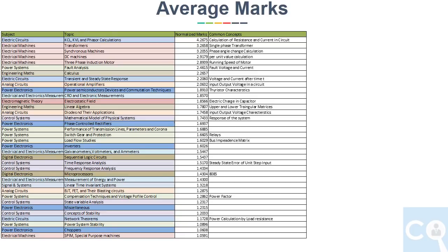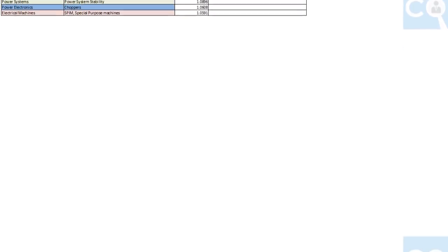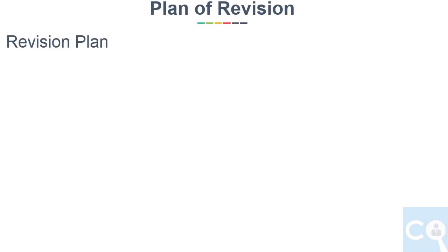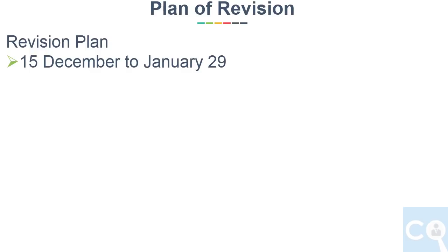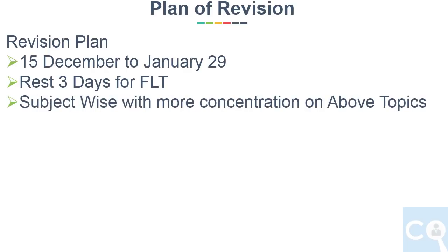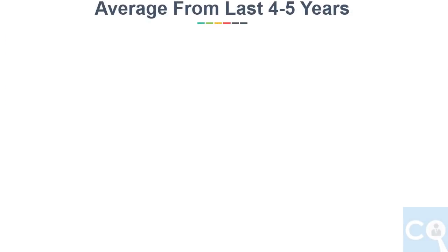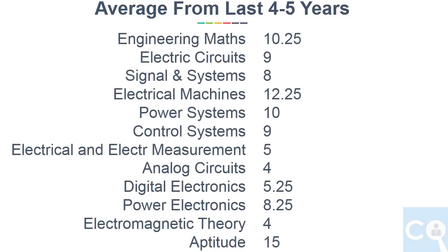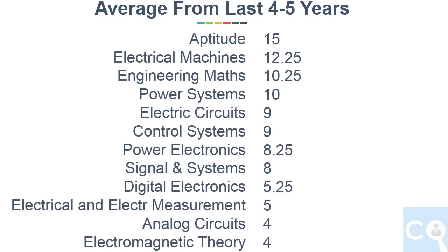Based on this analysis, we will distribute the number of revision days to each topic. The revision plan runs from 15th December to 29th January — 45 days for revision and the remaining 3 days for full-length tests. Rather than going topic-wise, we will go subject-wise, concentrating more on the important topics in each subject. The number of days for each subject is based on overall weightage. For the sequence of subjects, we analyze the last 4 to 5 years' average marks per subject, arrange from highest to lowest, and leave aptitude out of the scheduled plan since you should practice aptitude daily based on your comfort level.